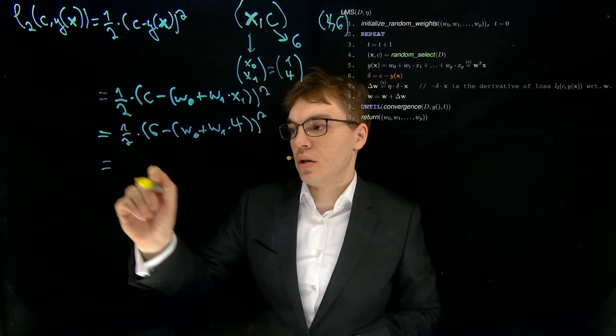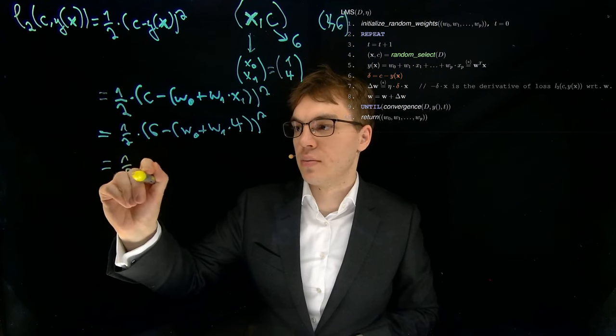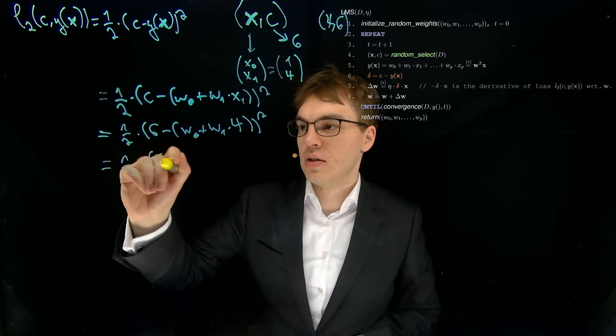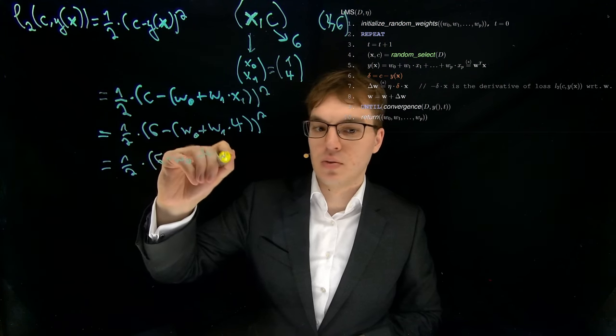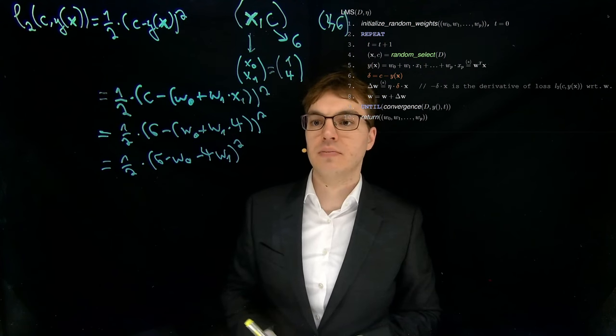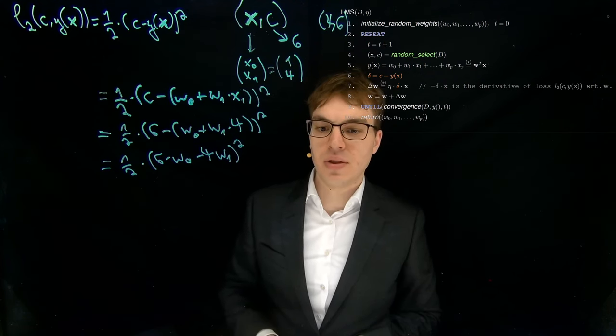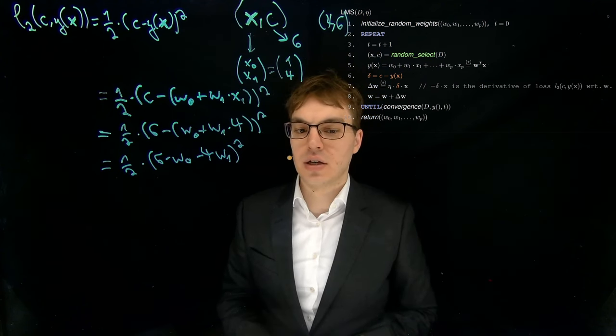I mean we can simplify this a little by resolving the brackets here: 6 minus W0 minus 4 times W1. But that's really all we can do here. The next step will then be deriving the gradient and actually computing the derivatives.